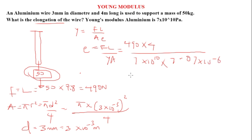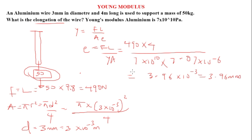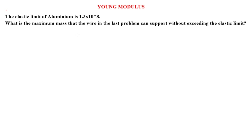Substituting all values, the extension comes out to 3.96×10⁻³ meters, which is the same as 3.96 millimeters. Let's solve another problem. The elastic limit of aluminum is given.